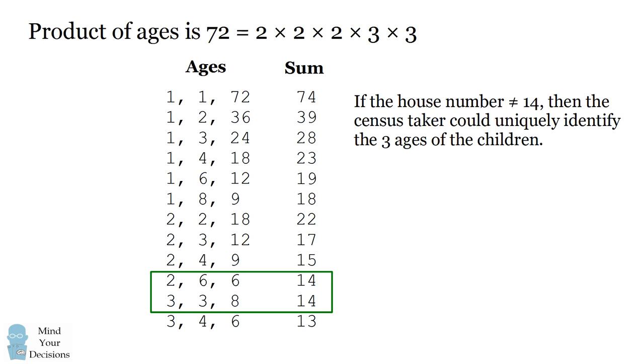So if the house number was anything besides 14, the census taker would uniquely be able to identify the three ages of the children. If the house number was 22, for example, the census taker would know the children have to be aged 2, 2, and 18. Or if the house number was 15, the census taker would know the ages would have to be 2, 4, and 9, because there's no other way you could get to that sum.